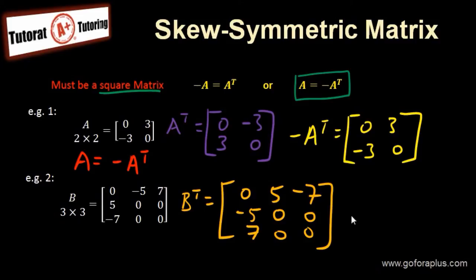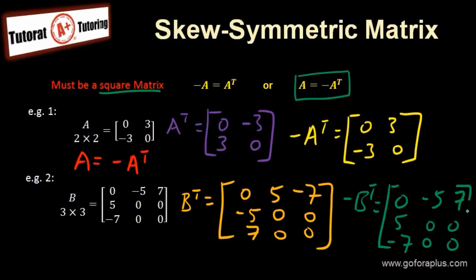And then, minus B transpose is equals to 0, minus 5, 7, 5, 0, 0, minus 7, 0, 0. Now this is minus B transpose. We can also conclude from this that B equals to minus B transpose because each element inside the matrix is the same.